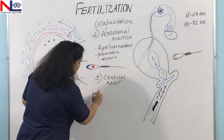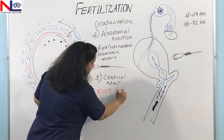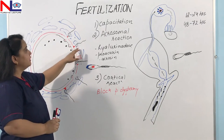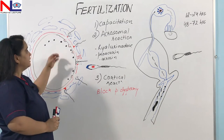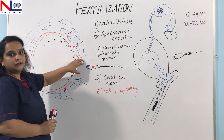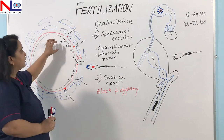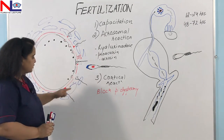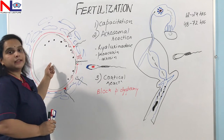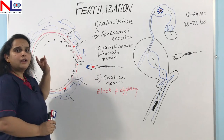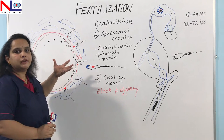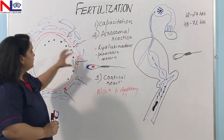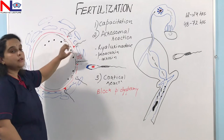The sperm cell that first touches the oolemma — the plasma membrane of the oocyte — triggers the cortical reaction. In this cortical reaction, the first sperm activates cortical granules in the oocyte's cytoplasm to fuse with the oolemma. These cortical granules release hydrolytic enzymes that digest the zona pellicida at multiple levels and make the oolemma hard, blocking polyspermy. This prevents further sperms from attaching to or entering the oocyte, since the oocyte only needs one sperm's genetic material.